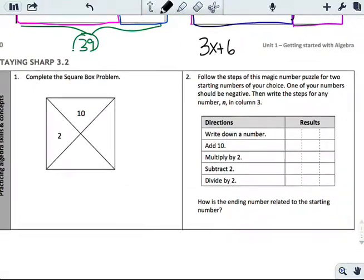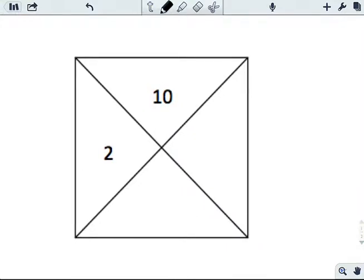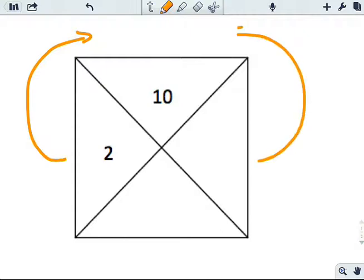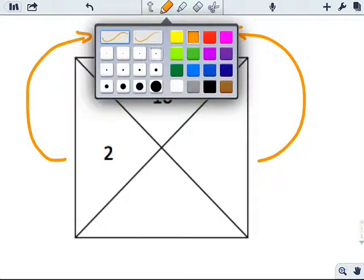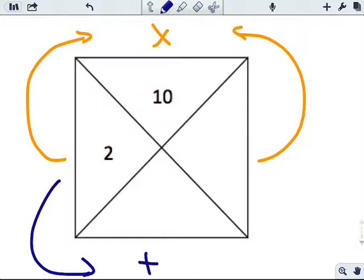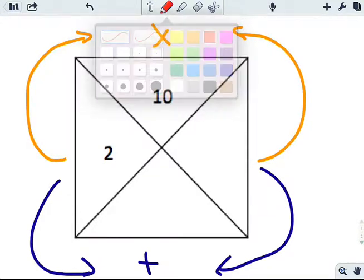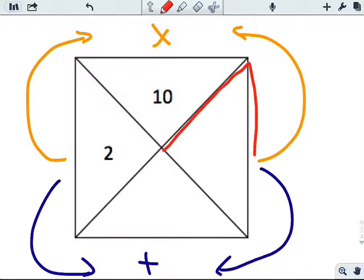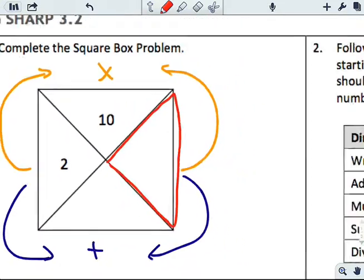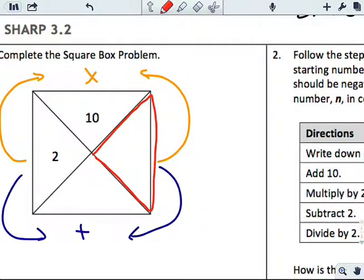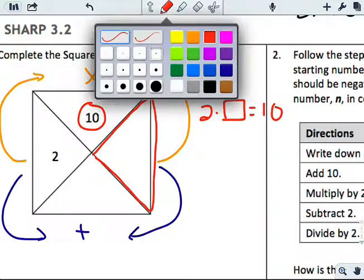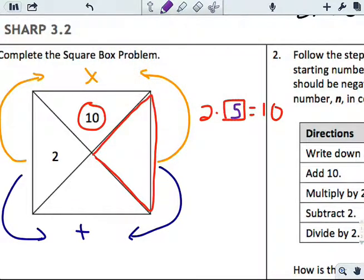Now let's do some review, some staying sharp. Complete the square box problem. The thing to keep in mind here is that if I take these two side numbers and interact them to the top, that's a multiplication problem. If I interact them to the bottom, that's an addition problem. The question to ask myself is where do I start? I need to start with multiplication. I already have a number 2 and my target is 10. The only number I can think of where 2 times a number equals 10 is 5, so that makes this number 5.